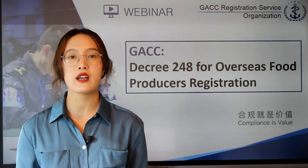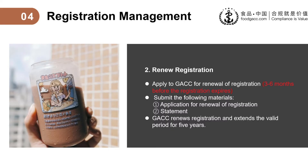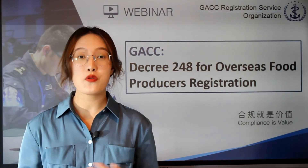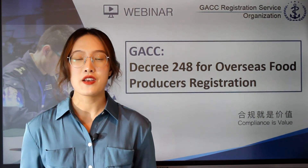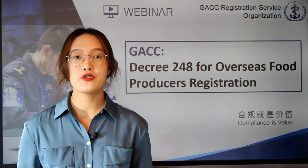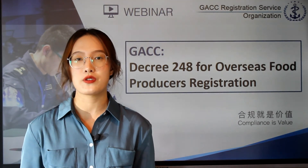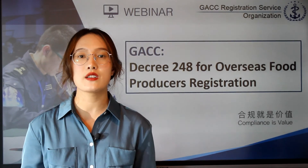Your registration number in China will automatically become invalid in such cases. If you want to renew your registration, you shall apply to GACC within three to six months before your registration expires, and submit the following materials: one, an application for renewal of registration; and two, a statement that you promise to continuously conform with the registration requirements. If you meet the requirements, GACC will renew your registration and extend the validity period for five years. The new regulation 248 also clarifies the mutual responsibilities of the CA, overseas producers, and GACC. The competent authority shall supervise registered producers and urge them to continuously meet the registration requirements.